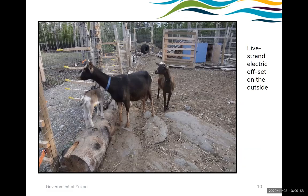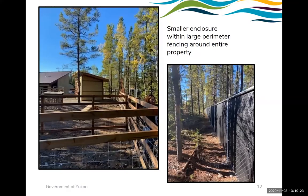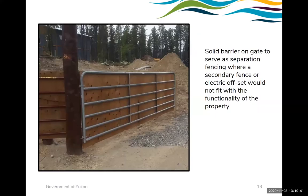Here are a few examples of enclosures in the Yukon. In one, you can see a goat enclosure with a five-strand electric offset on the outside. In another, the electric offset was chosen to be on the inside, as the primary fence already existed and was very close to the property line. There's also an example of a smaller goat enclosure with a large perimeter fence around the entire property — no electric, but sufficiently meeting our requirement to prevent nose-to-nose contact. Finally, a solid barrier on a gate serves as separation fencing where secondary fencing or electric offset wouldn't fit with the property's functionality.